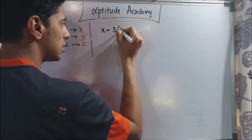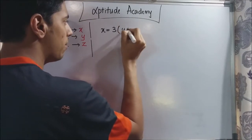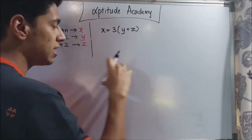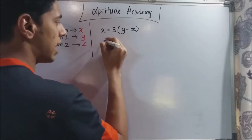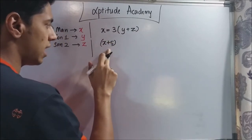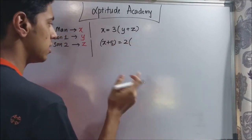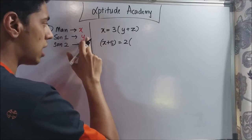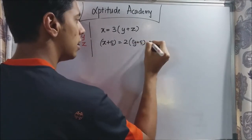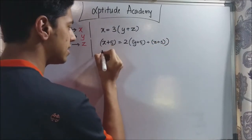So x equals three times the sum of the ages of his two sons: y plus z. In the second statement, they said five years hence. So if his current age is x, after five years his age will be x plus five. The father's age will be twice the sum of the sons' ages. If a son's age now is y, after five years it will be y plus five, and the other son will be z plus five. This is how you write the equation.